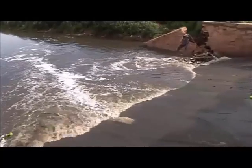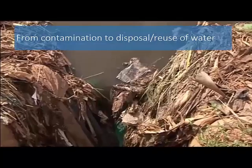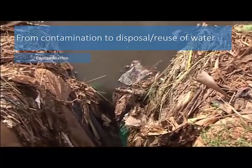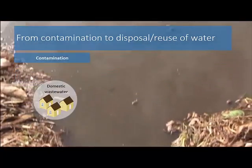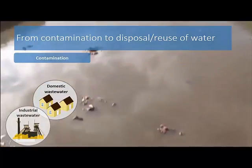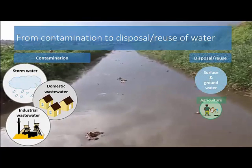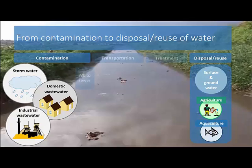Water streams in these settings are often contaminated with domestic and industrial wastewater. An influx of stormwater can then cause these sanitation systems to collapse. However, these waters, which are rich in nutrients and available all year round, are valuable and can be reused in agriculture, in aquaculture, or for groundwater recharge.